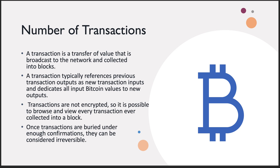A transaction typically references previous transaction outputs as new transaction inputs and dedicates all input Bitcoin values to new outputs. So if I moved a bunch of Bitcoin over to Tommy, that would be the transaction output, and Tommy would have a new transaction input of however many Bitcoin I gave him. Transactions are not encrypted, so you can actually view every transaction ever collected into a block.